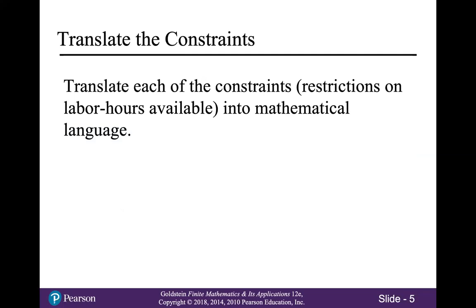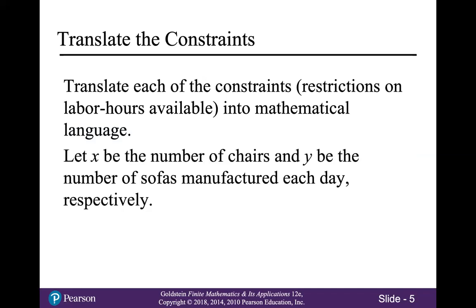Now we will translate each of the constraints, which are restrictions on labor hours, into mathematical language. We're going to let X be the number of chairs and Y be the number of sofas. Make a note that in general, when you're setting up a linear programming problem, X and Y are going to stand for the things that are in the actual question. The question in this problem was: how many chairs and how many sofas should be manufactured each day to maximize profit? So that's what we're going to name X and Y after.